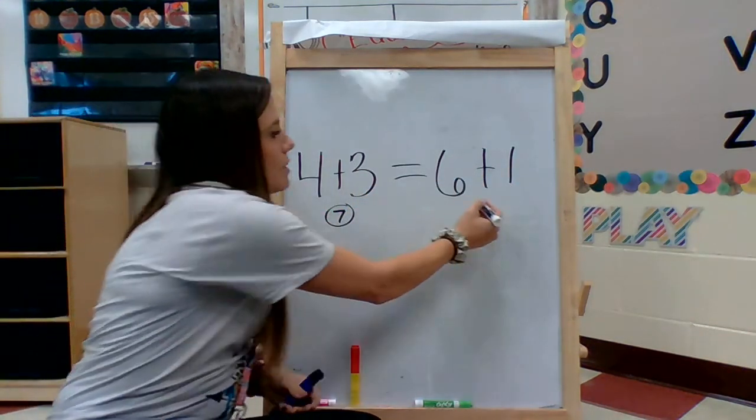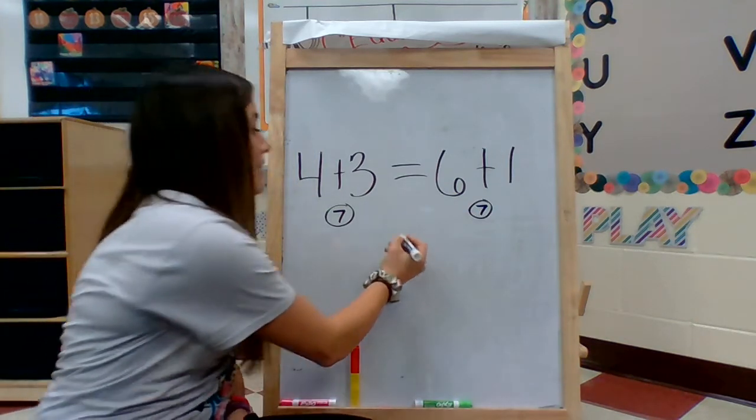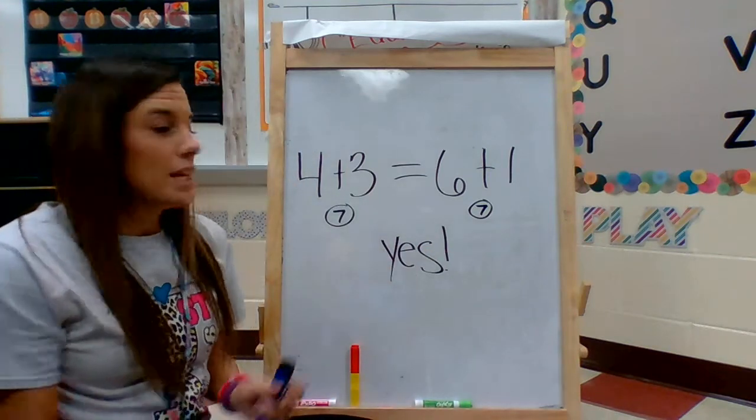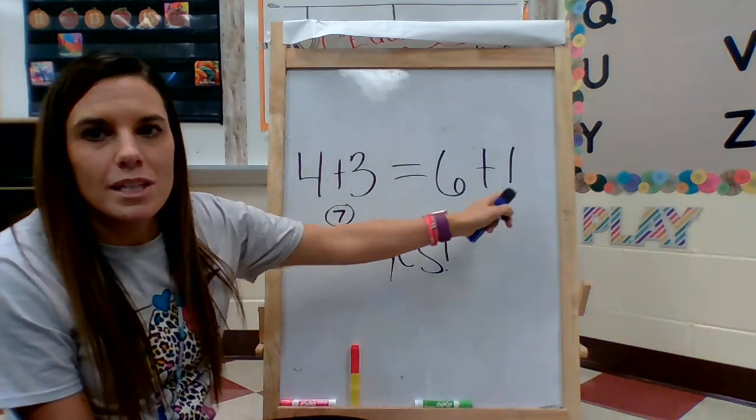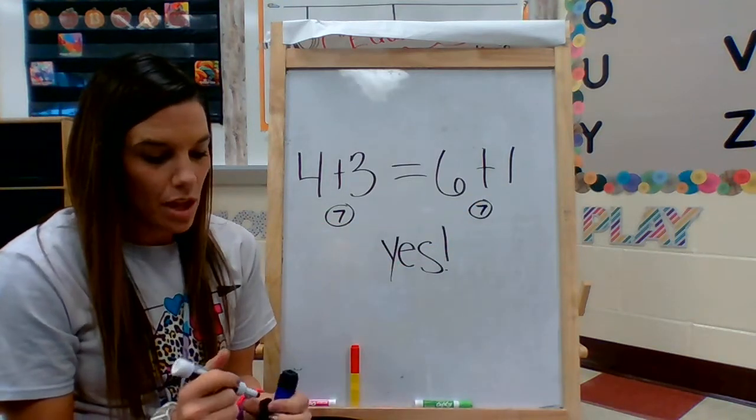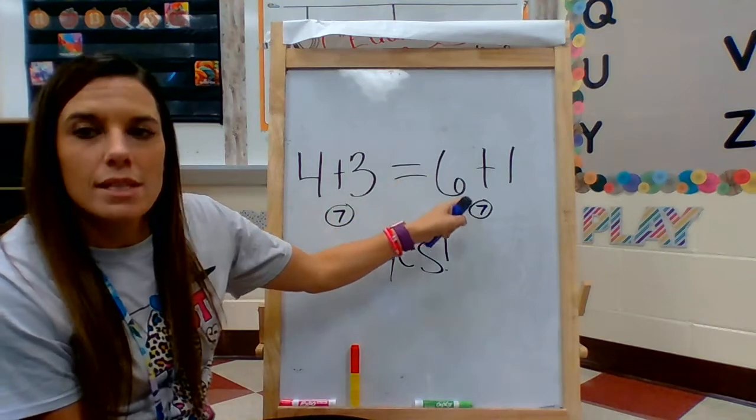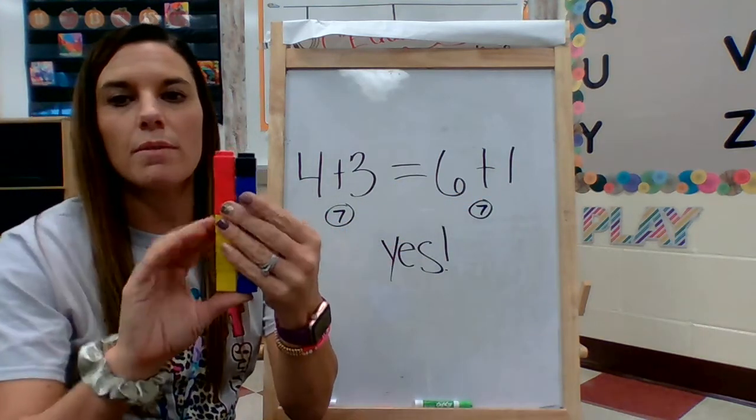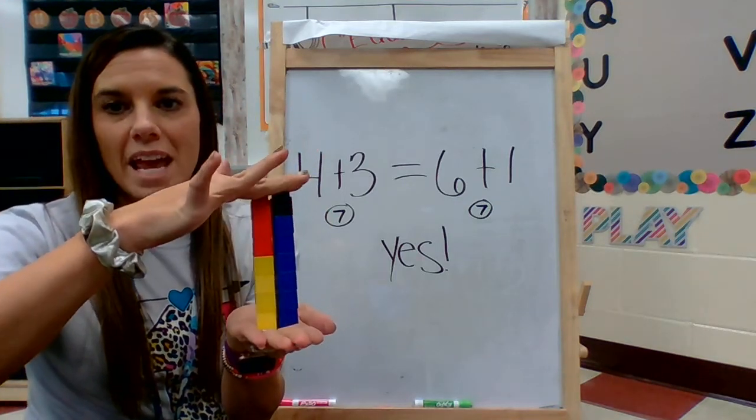Are they the same equation? They are. We really can say that 4 plus 3 equals 6 plus 1. And if I hold up my towers next to each other, even though we have different numbers, they're the same size.